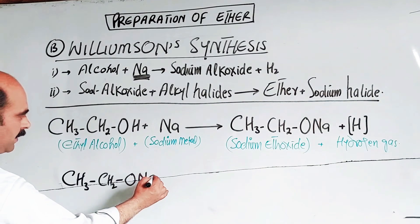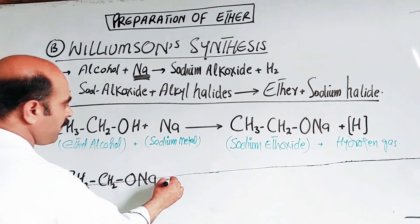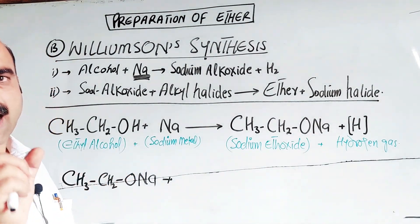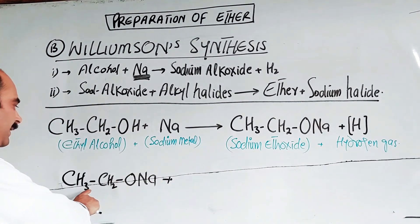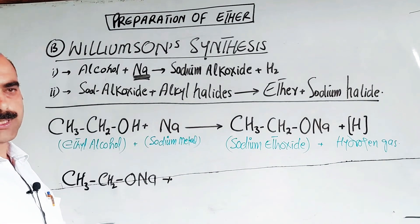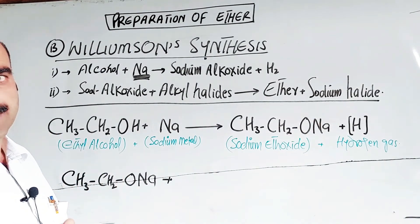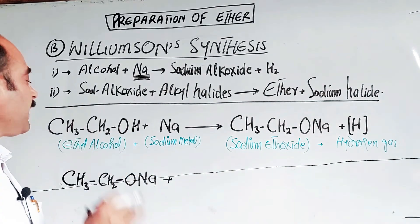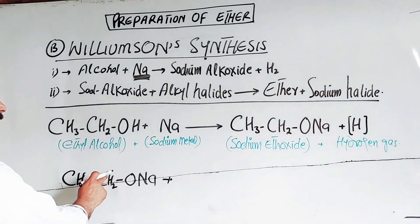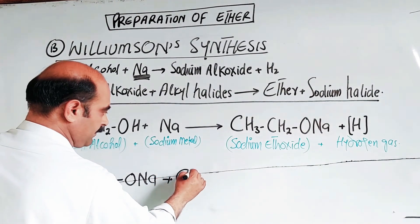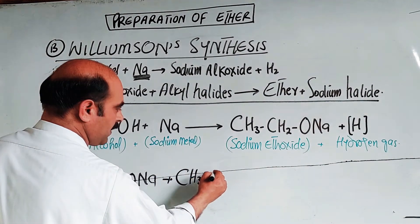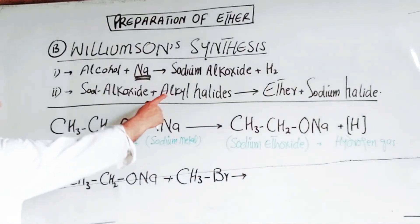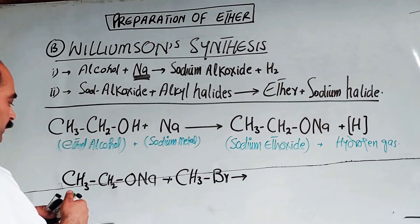Sodium ethoxide plus an alkyl halide (RX) reacts. The alkyl portion can be ethyl, methyl, normal propyl, or isopropyl - giving a mixed ether if they differ. For example, we use methyl bromide (CH₃Br) as the alkyl halide. Due to polarity, the oxygen attacks from negative toward positive, breaking the C-Br bond.